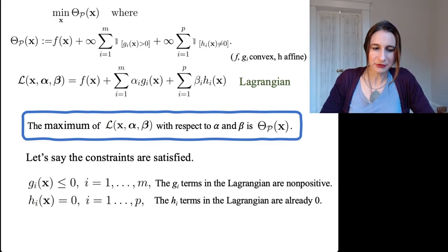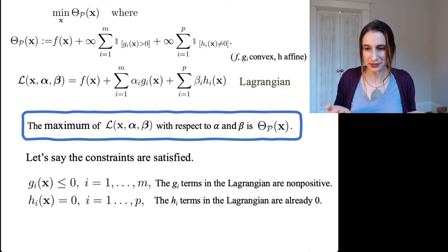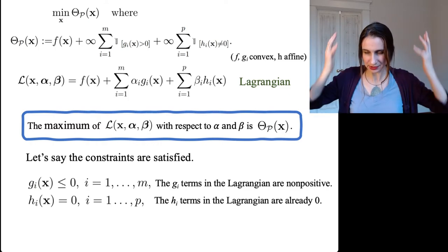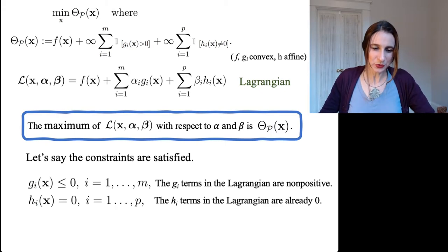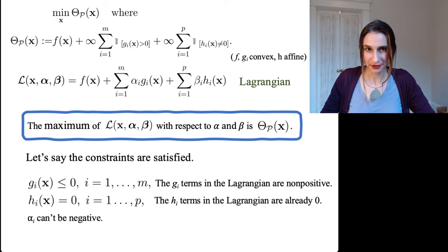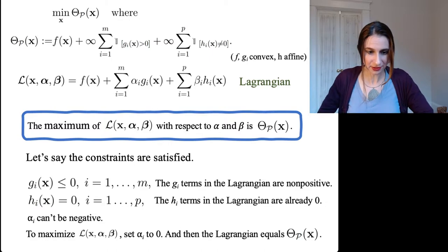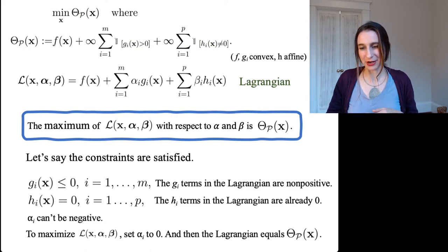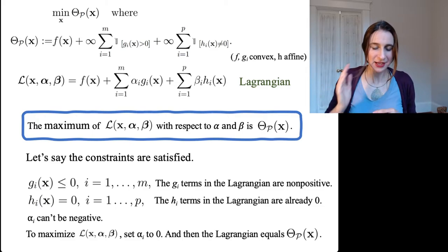Normally, if the gi's are negative, we would want to set the alpha i's to be negative, because negative times negative is positive and we'd get something really large. But the alphas are not allowed to be negative. The best we can do is set alpha to zero, and that will maximize the Lagrangian. So if we set the alphas to zero, the Lagrangian is exactly equal to the primal — they're both equal to f of x. That's when the constraints are satisfied.